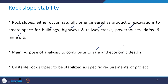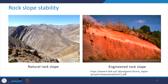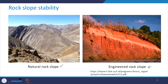Unstable rock slopes need to be stabilized as per the specific requirement of the projects. Here you can see two pictures — the first one is showing a natural rock slope, taken somewhere on the way from Manali to Leh, and the second one is an engineered rock slope where a road has been cut into the slope to create space.